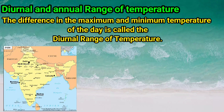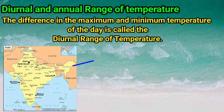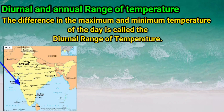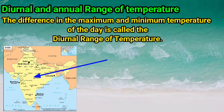The difference in the maximum and minimum temperature of a day is called the diurnal range of temperature. The difference in day and night temperature is less in coastal areas and more in continental areas. The climate is equable in coastal regions while it is extreme in continental areas. For example, the diurnal range of temperature is less in Konkan because Konkan is located in a coastal region, and it is high in Vidarbha because Nagpur and Amravati are located in a continental area. Hence, the climate of Mumbai is equable and that of Nagpur is extreme.